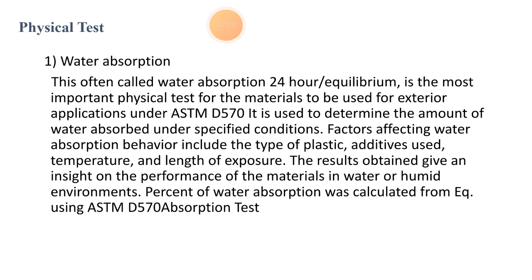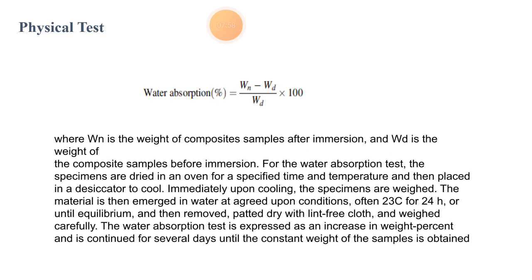The second area is physical testing, in which water absorption is one important test. Water absorption — 24-hour equilibrium — is the most important physical test for materials to be used in exterior applications under ASTM D570. It is used to determine the amount of water absorbed under specified conditions. Factors affecting water absorption behaviour include the type of plastic additive used, temperature, and length of exposure. The results give insight on the performance of materials in water or humid environments. The percentage of water absorption is calculated from the equation: Water Absorption (%) = (WN - WD) / WD × 100, where WN is the weight of the composite sample after immersion and WD is the dry weight of the composite sample.